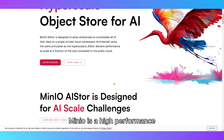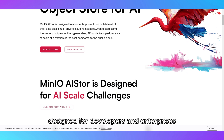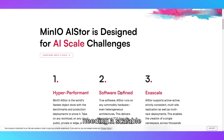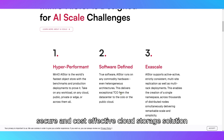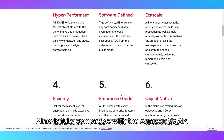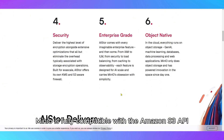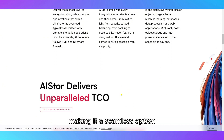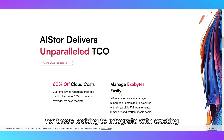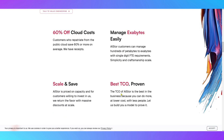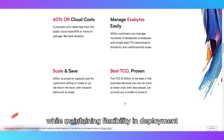Minio is a high-performance, distributed object storage system designed for developers and enterprises needing a scalable, secure, and cost-effective cloud storage solution. Minio is fully compatible with the Amazon S3 API, making it a seamless option for those looking to integrate with existing applications and services while maintaining flexibility in deployment.